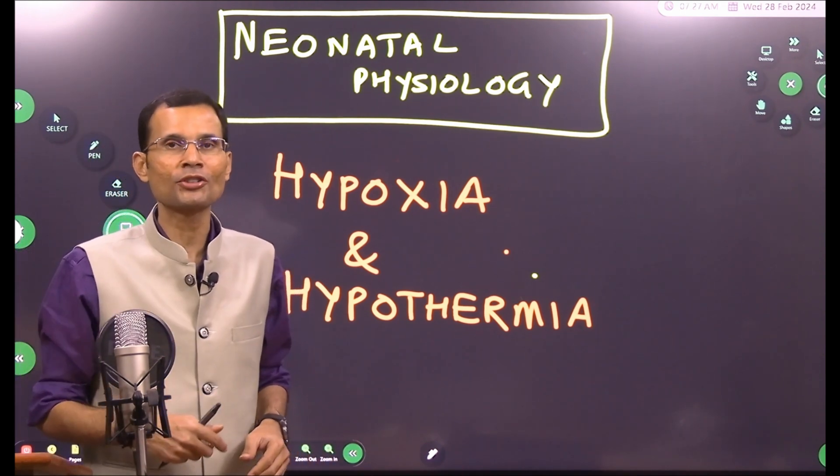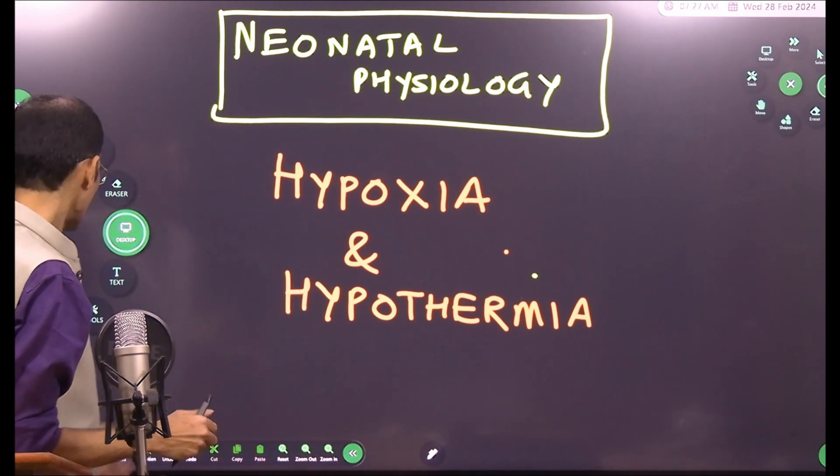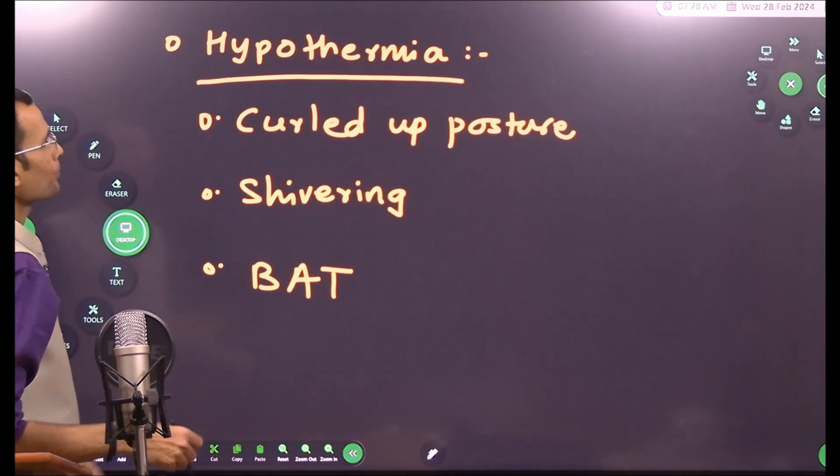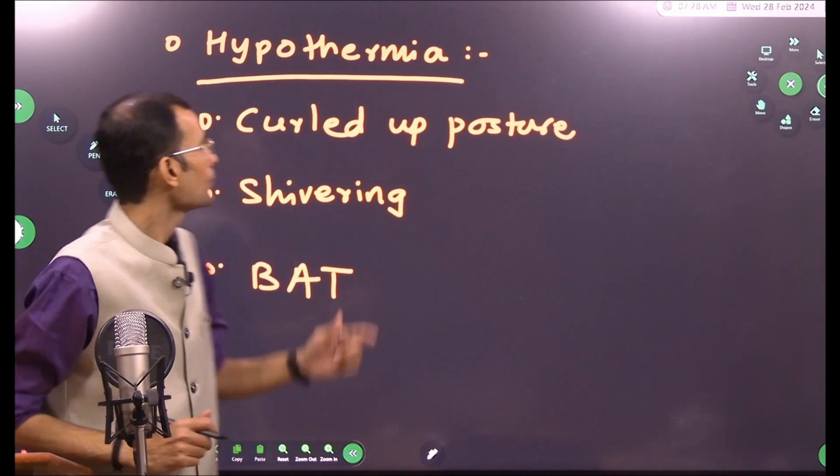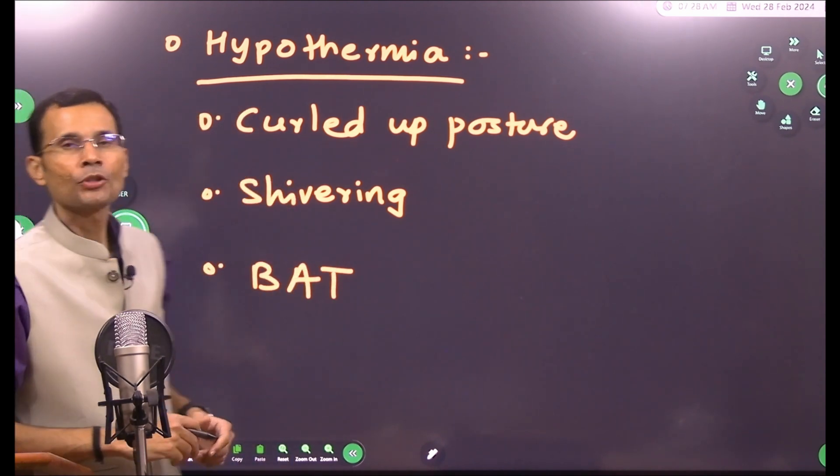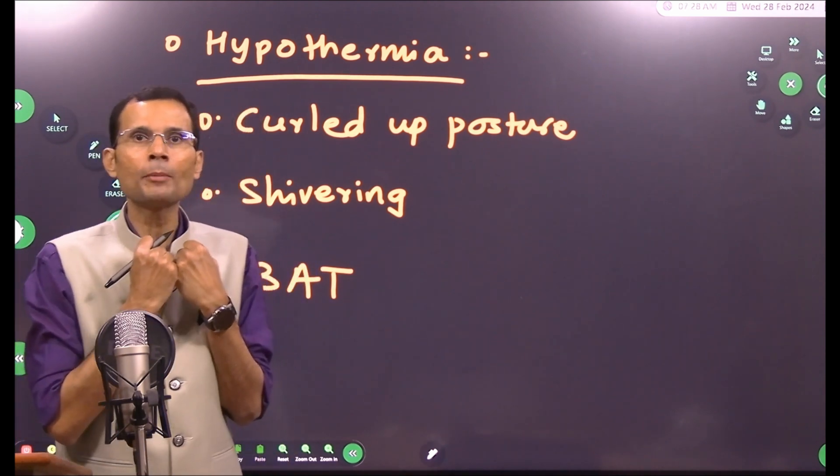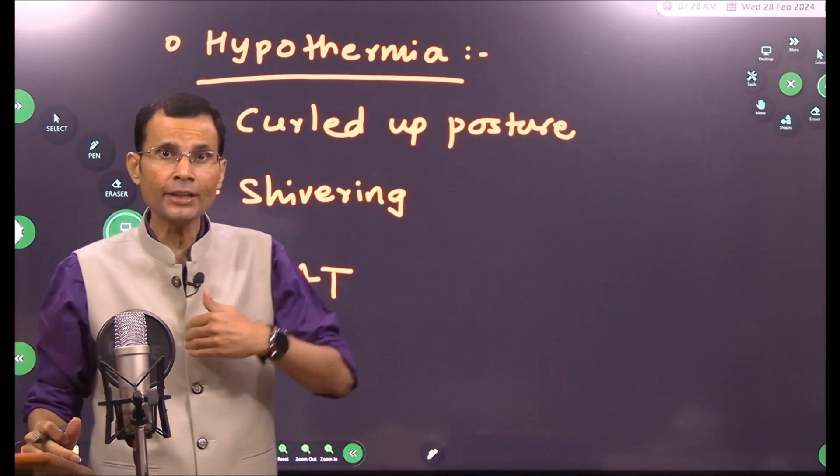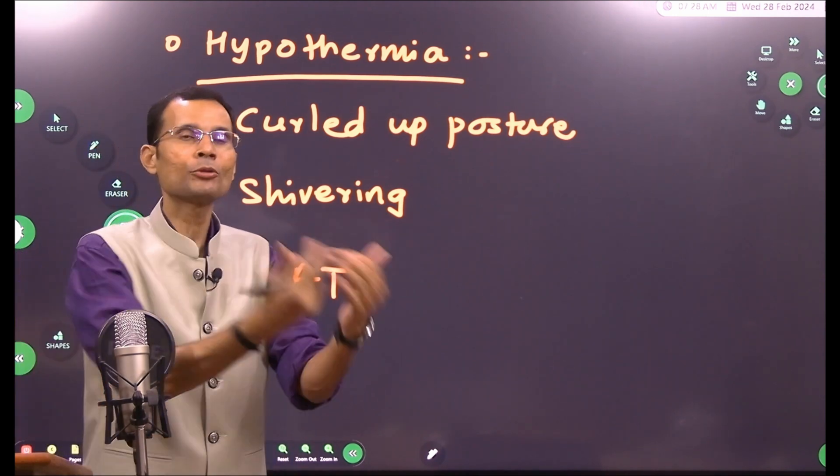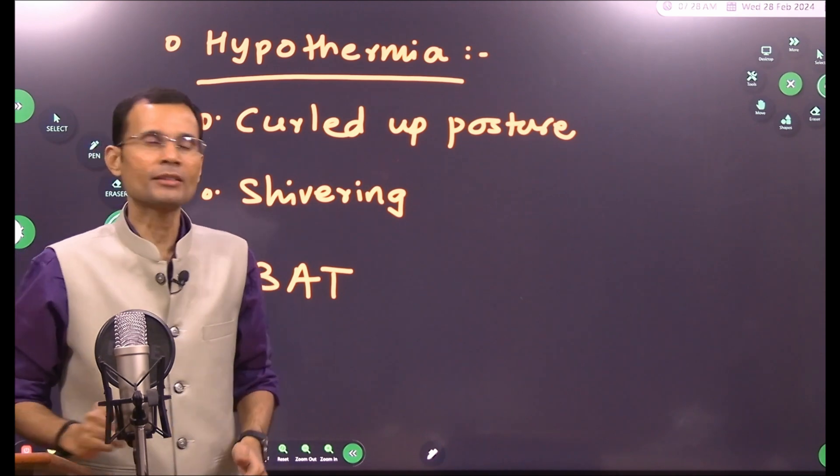So these two are the immediate threats. How does the baby successfully overcome these threats? What about hypothermia? You know, babies initially have that curled up posture, which decreases the surface area of the body so that heat transfer from the body to the outside will be minimized.